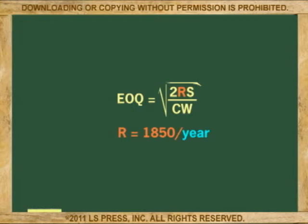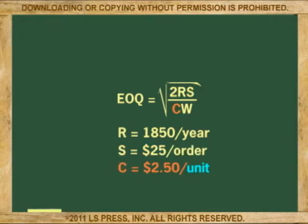To use the equation we also need to know how much it costs to place an order. Let's say that every time we place an order, it costs us $25. We also need to know the cost of one half gallon of the ice cream — let's place it at $2.50 — and also the cost of warehousing as a percent. I'll put the cost of warehousing at 30%, because being ice cream, it requires lots of refrigeration.